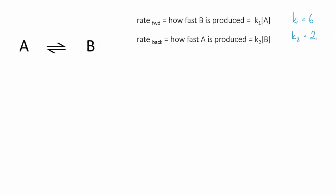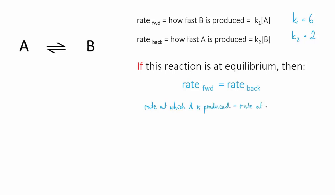So if this reaction is at equilibrium, then the forward rate equals the reverse rate, and that means that the rate at which B is being produced equals the rate at which A is being produced. So we could write that K1A, or K1 times the concentration of A, equals K2 times the concentration of B. And then if we substitute in those values for the two Ks, we get 6 times A equals 2 times B.